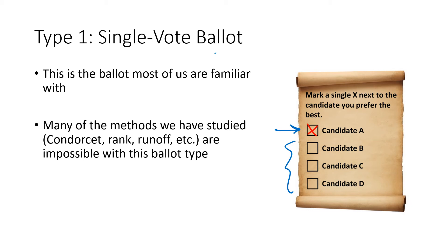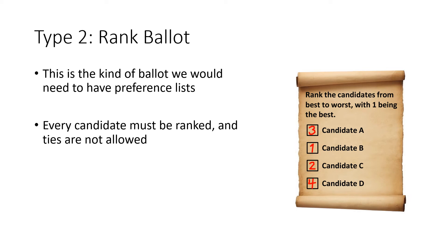What we've been talking about for the last several lectures requires rank ballots. You put a numbering to the candidates in order from your favorite candidate — indicated with the number one — then your next candidate two, third candidate three, fourth candidate four. This is just another way of representing the preference order: B first, C second, A third, and D fourth. Every candidate must be ranked and ties are not allowed.